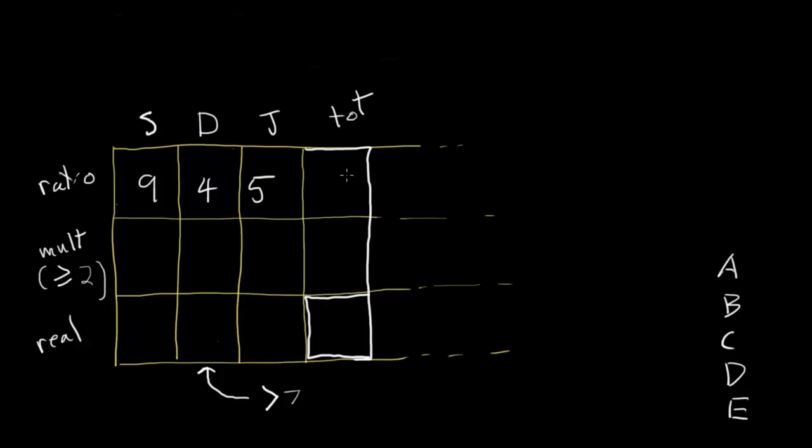And we already know the ratio total. The ratio total is just 4 plus 5 is 9, plus 9 is 18. So really all we're looking for is our multiplier. If we can figure out what number goes in this row, then we'll be able to figure out what to multiply 18 by to get our real total.